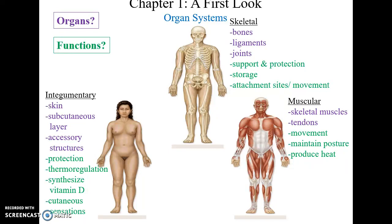The skeletal system is made up of bones, ligaments, and joints. It supports the body by giving us a frame, protects underlying organs, stores calcium and phosphate in the bones as well as fatty tissue in the bone marrow, and serves as an attachment site for muscles that allow for movement.